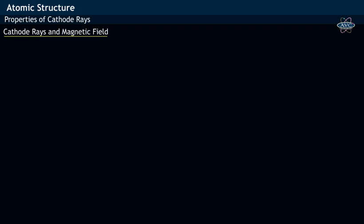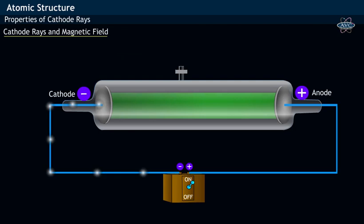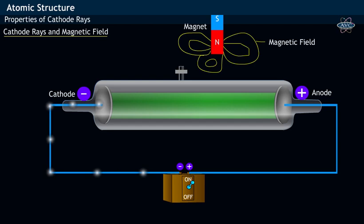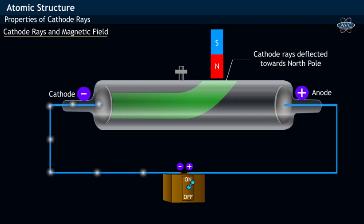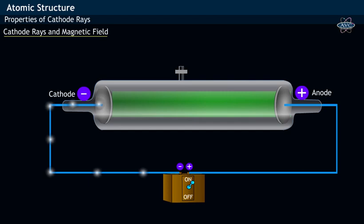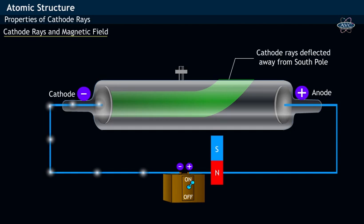Cathode rays and magnetic field. Cathode rays are deflected by a magnetic field. A magnetic field via magnet is applied perpendicular to the plane of cathode rays, with the north pole pointing closer to the cathode ray discharge tube. It was observed that the cathode rays are deflected towards the north pole of the magnet. When the magnetic field with the south pole pointing towards cathode rays is applied, cathode rays were deflected away from it. This indicates the negative character of cathode rays.